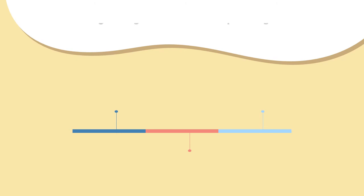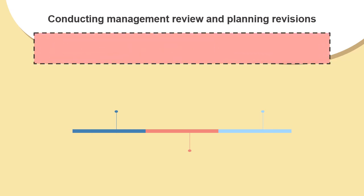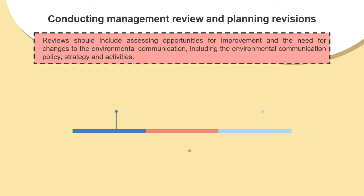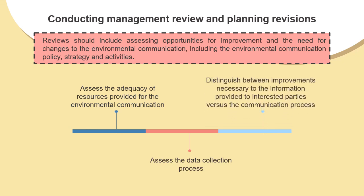Finally, we will wrap up with our last topic: conducting management review and planning revisions. Under this, assessing opportunities for improvement and the need for changes to the environmental communication should be reviewed, including the policy, strategy and activities. The adequacy of resources provided for the environmental communication is assessed, the data collection process is then assessed, and lastly, the improvements necessary to the information provided to interested parties versus the communication process is distinguished.